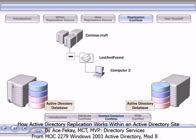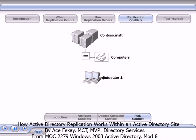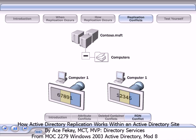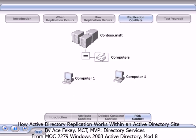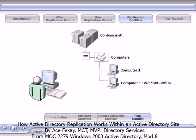An administrator must manually retrieve the object from Lost and Found and place it in an appropriate container. An RDN, or relative distinguished name, conflict occurs when two replicas attempt to place objects with the same RDN in the same container concurrently. When this conflict occurs, the object that has the globally unique stamp with the higher numeric value keeps the RDN, and the other object is renamed by appending information to the RDN. The name of the new object does not conflict with the RDN of any other Active Directory object. When an RDN conflict occurs, an administrator must rename the sibling object with a name that does not conflict with another relative distinguished name in the destination container.